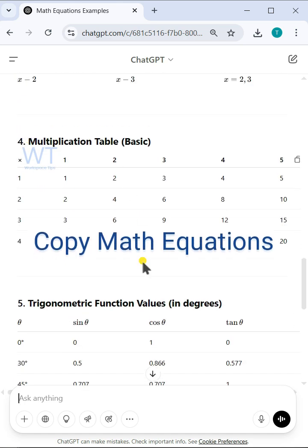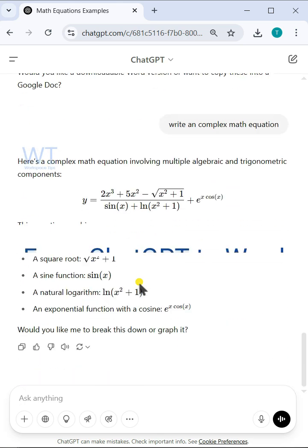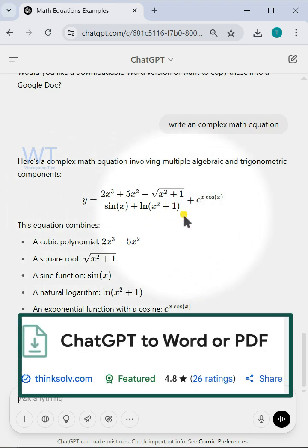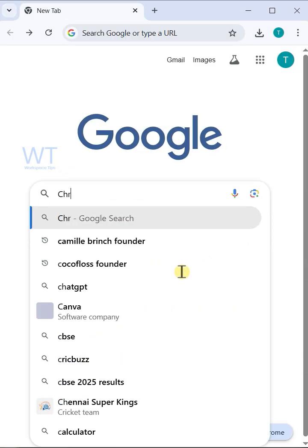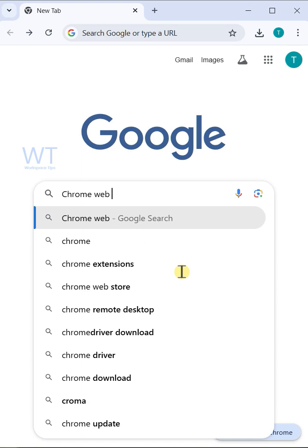Easiest way to copy math equations and tables from ChatGPT to Word by using ChatGPT to Word or PDF Chrome extension. Open a new tab and search and open the Chrome Web Store.